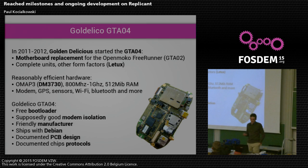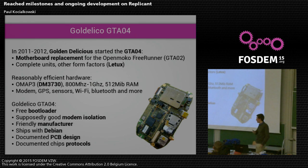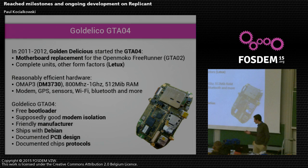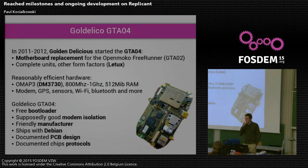That's when a company called Golden Delicious in 2011–2012 decided to introduce a motherboard replacement for that device — the GTA04. It's just that motherboard you insert back into the GTA02 case. It has new hardware: an OMAP3, which is reasonably efficient, plus many cool hardware features. And most importantly, it has a free bootloader — the chip doesn't check signatures, so you can actually build your own bootloader and install it. It has supposedly good modem isolation because we mostly have the PCB design, and a friendly manufacturer, Debian support, and well-documented chips.